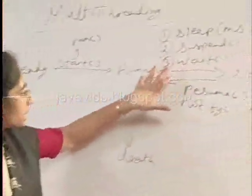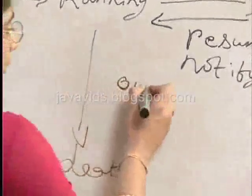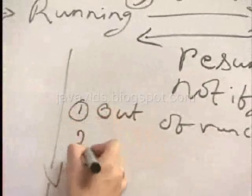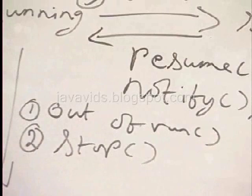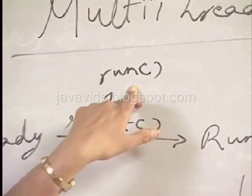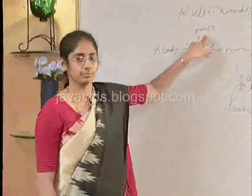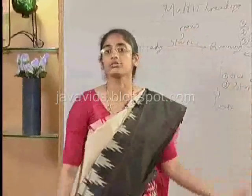To move from a running state to the death of a thread, you either come out of the run method — which the start method had invoked — or you call stop on the thread. The run method is where the entire execution and functionality of the thread is defined, so when you come out of the run method, it is the end of the thread.